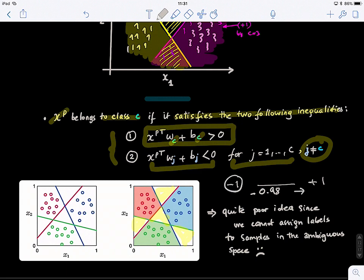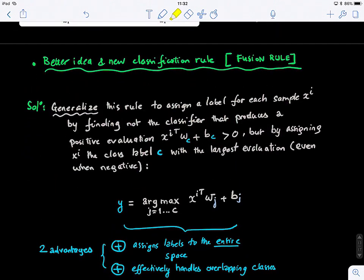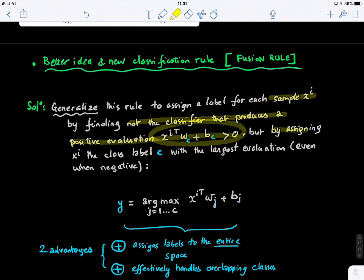So basically, the idea is to take those, to take the votes by all classifiers and take the highest value, because the higher the value, the more confident you are. Let's say, hypothetically, by your linear classifier, get something like 0.6. This classifier is not very confident, because it's closer to one than negative one, but it's still a low value than when you're getting 0.9 by another classifier, so you'll trust this classifier more. So the idea here is, basically, we want to generalize this, so we want to assign labels for each sample Xi by finding not only the classifier that produces the positive evaluation for this, but by assigning Xi the class label automatically with the largest evaluation, even if it's negative, so the largest weight, the largest prediction.